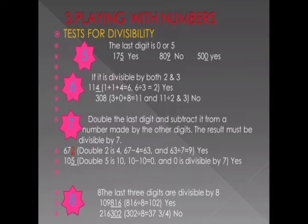For divisibility of 7: you double the last digit. For example, in the number 672, the last digit is 2. Double 2 gives you 4. Now subtract that 4 from the remaining number 67: 67 minus 4 is 63. Since 63 is divisible by 7, the whole number 672 is divisible by 7.